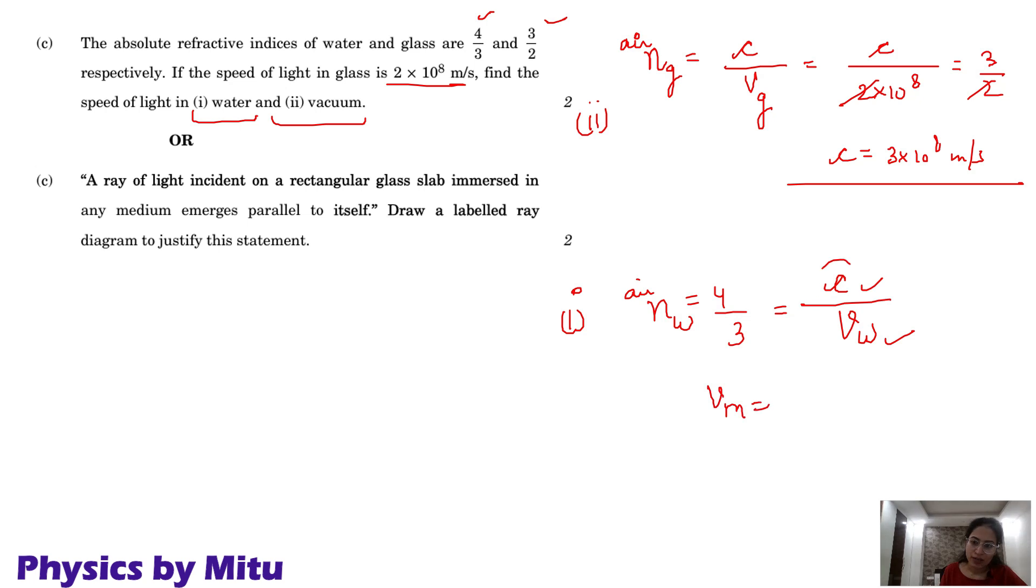V water will be, put this value here. So you will get 9 upon 4 into 10 to the 8 meter per second. You can solve it, give it in decimals.